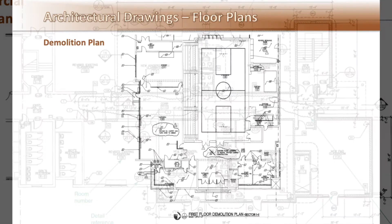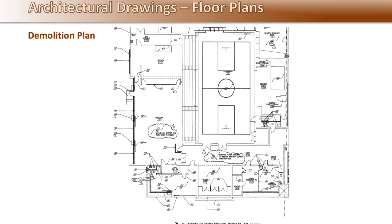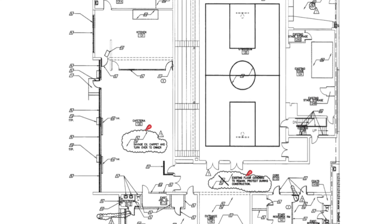An example of a demolition plan. Note the revision cloud and the triangular identification revision number. The revision number would also be referenced in the title block with the date of the revision.